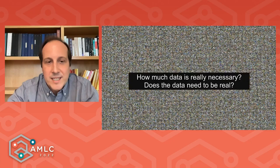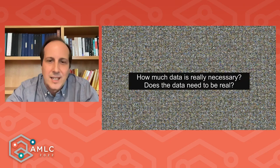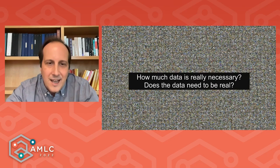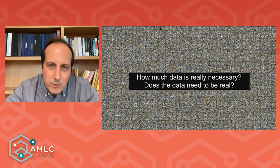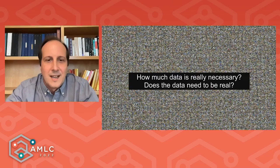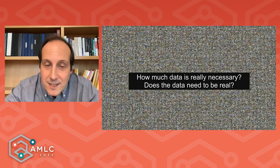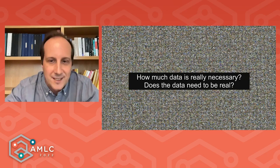Generally, computer vision systems and machine learning in general require a lot of data. We need millions of images to train computer vision systems capable of solving visual tasks with good performance. The question really is: how much data is necessary? Do we need all this data? Can we get away with very, very little data? And does this data need to be real? Reality is full of problems — can we use data that is not real, and what type of not-real data can we use?